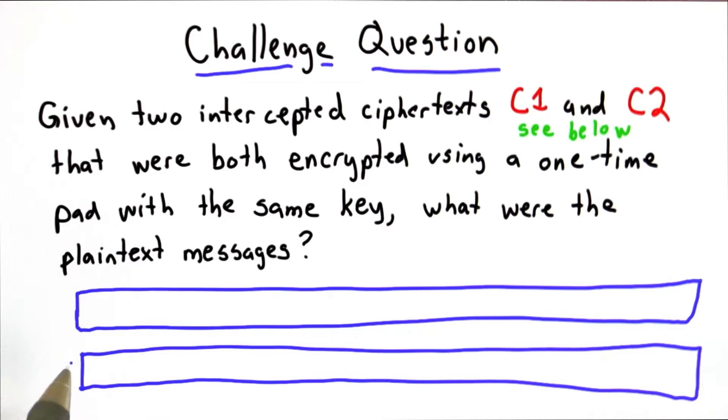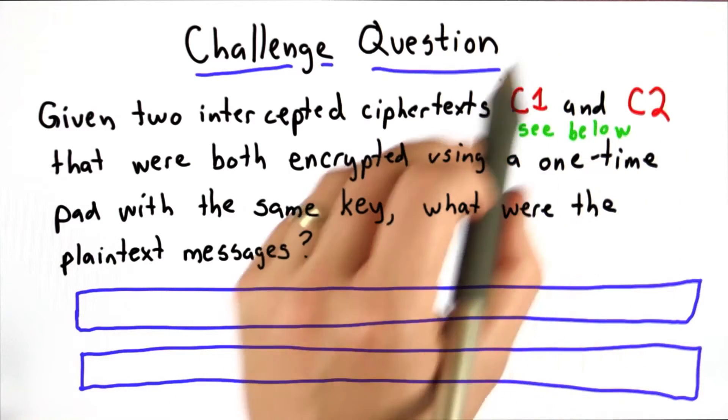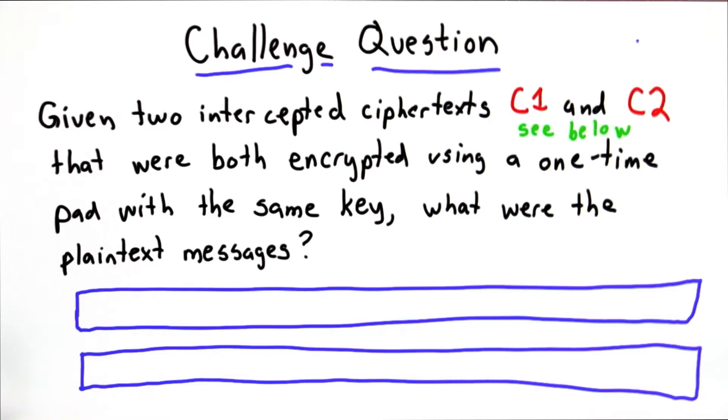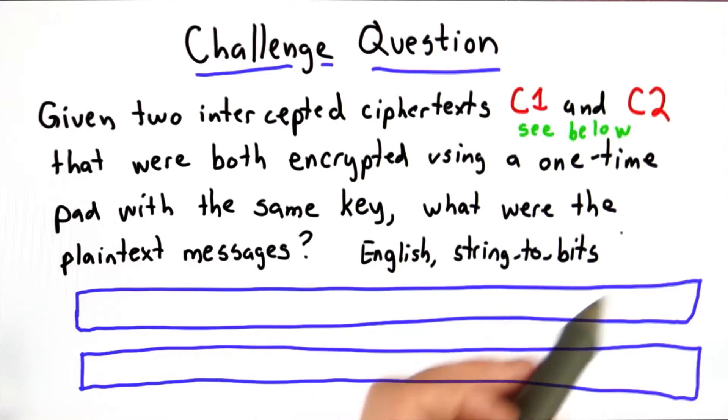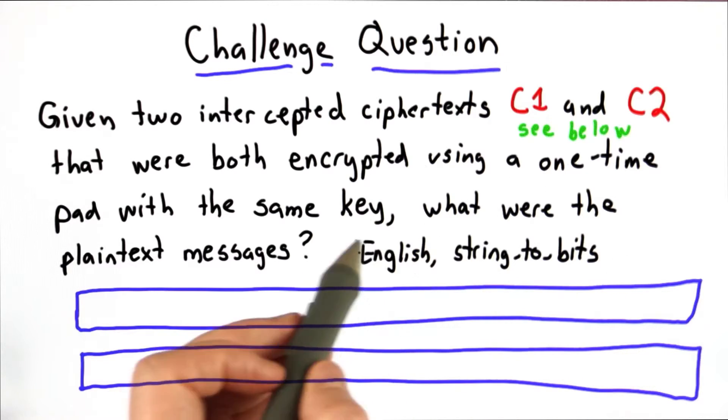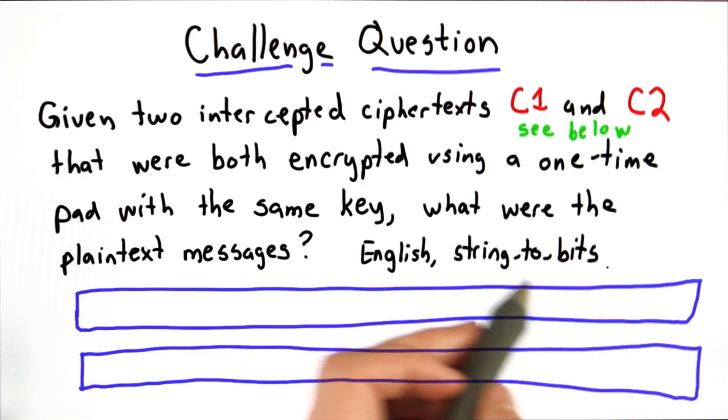You can enter these in any order, and it should be clear that which one is which can't really be determined. Figure out what the two plaintext messages corresponding to the two intercepted ciphertexts are. You can assume both messages are in English and were encoded using string-to-bits, which maps English to sequences of bits.